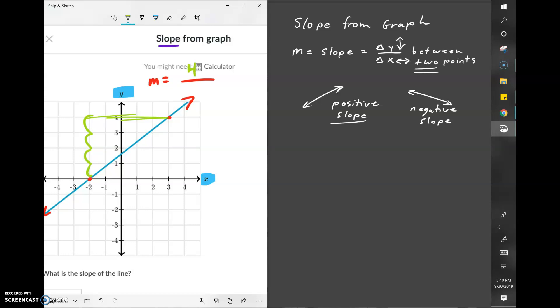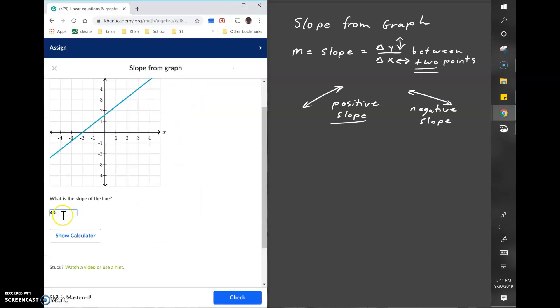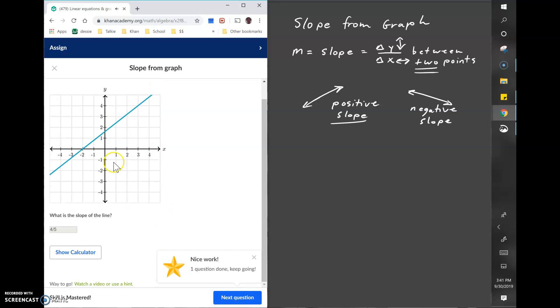And the change in the run, we're going to do the same thing, but this time we're calculating the change in the x. So it changes one x value, two x values, three x values, four x values, five x values, and now we're even with that point. So four over five would be the slope. And now I'm just punching that in right here, four over five, I'm hitting check and moving on to the next problem.